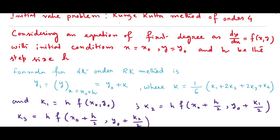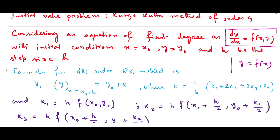We know that Euler's method is RK method of order 1 and Euler's modified method is RK method of order 2. Here we will also consider a first order differential equation: dy/dx equals f(x, y), where f(x, y) is the corresponding function, x is the independent variable and y is dependent on x. Initial conditions are given as x equals x-naught, y equals y-naught, and h is the step size.